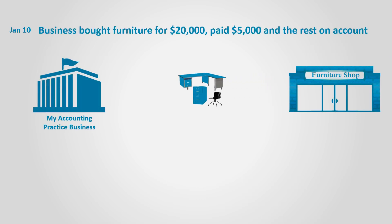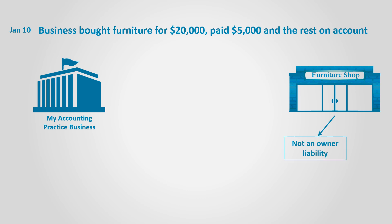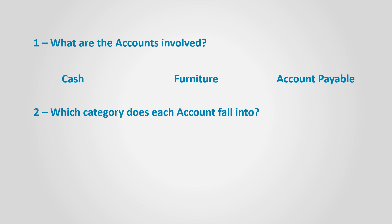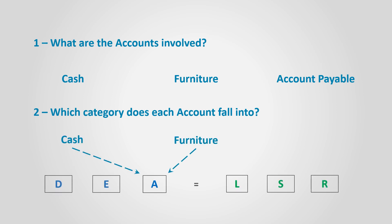On January 10th, the business bought furniture for $20,000, paid $5,000 in cash and the rest on account. To analyze the transaction, we ask ourselves five questions. What are the accounts involved? Since the business bought furniture, the furniture account or office furniture account is involved, and cash is paid, so the cash account is also involved. Also, the business owes money to someone other than the owner — the furniture vendor — so a liability account is involved, which is the accounts payable account. Which category does each account fall into? Both cash and furniture fall in the asset category, and accounts payable falls in the liability category.